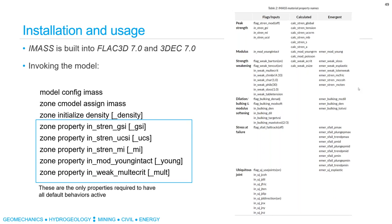How does the speed of IMAS compare to the Strain Softening Ubiquitous Joint (SUBI) model? It changes relative to different versions, but I think right now it's faster than the SUBI model. Joe notes these two models are now quite a different speed.